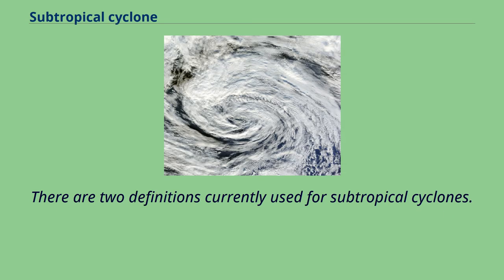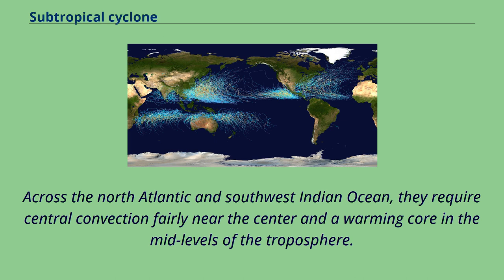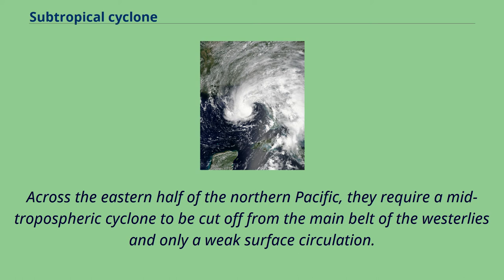There are two definitions currently used for subtropical cyclones. Across the North Atlantic and Southwest Indian Ocean, they require central convection fairly near the center and a warming core in the mid-levels of the troposphere. Across the eastern half of the northern Pacific, they require a mid-tropospheric cyclone cut off from the main belt of the westerlies and only a weak surface circulation.